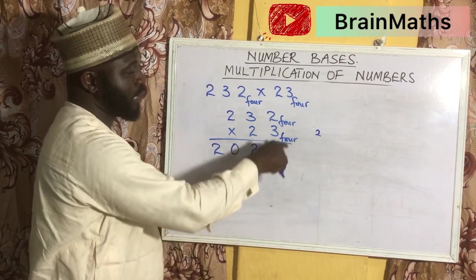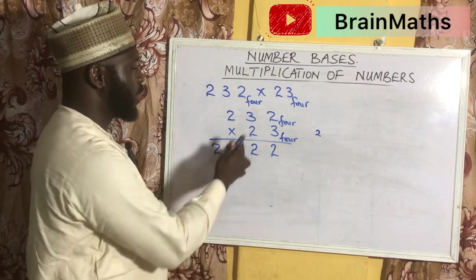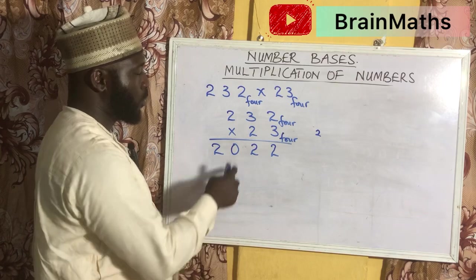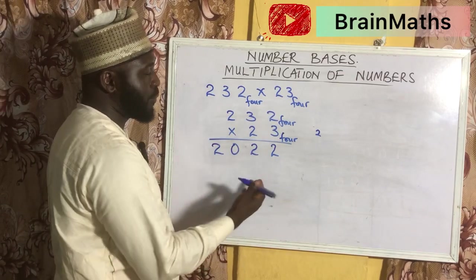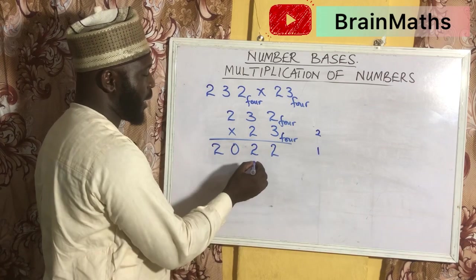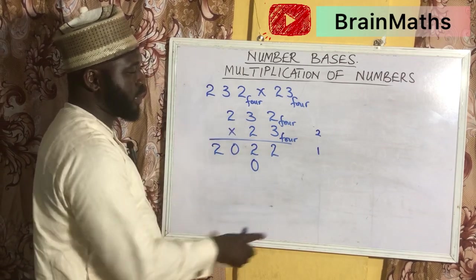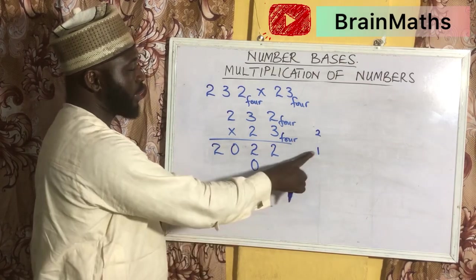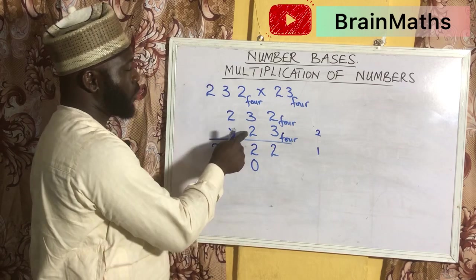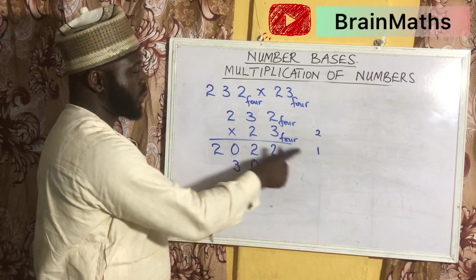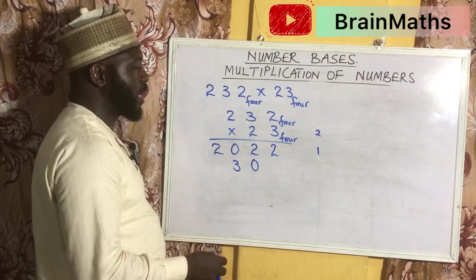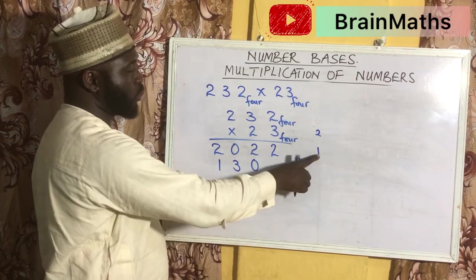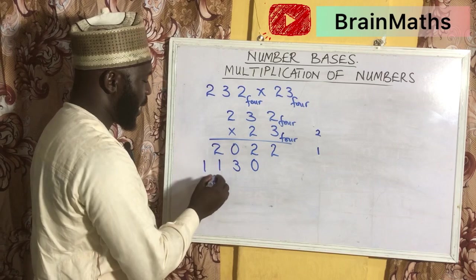None of the digits exceed 4, so take note of that. Then going to the second multiplication, which is to multiply 2 by everything at the top. 2 times 2 is 4 — how many 4s in 4? That is 1, remainder 0. 2 times 3 is 6, plus this 1, gives 7 — how many 4s in 7? That is 1, remainder 3. 2 times 2 is 4, plus this 1, gives 5 — how many 4s in 5? That is 1, remainder 1. So this 1 is written down as the last number.